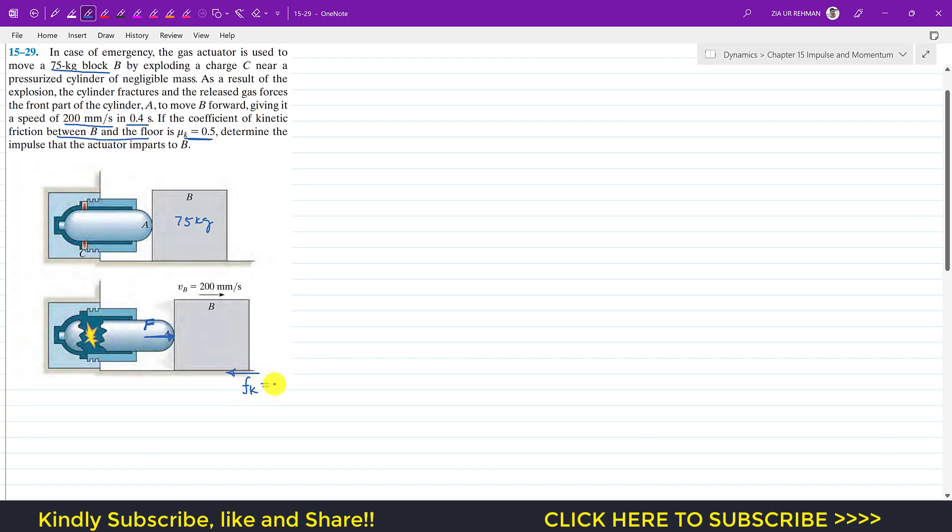The explosion is equal to 0.5 times the normal force. We are asked to determine the impulse that the actuator imparts to B. So we need to find the impulse due to this force F. The weight of the block acts vertically downward and the surface applies the normal force upward.